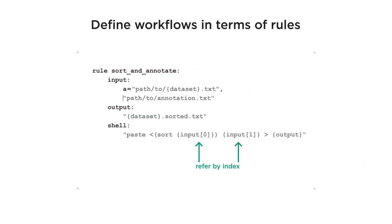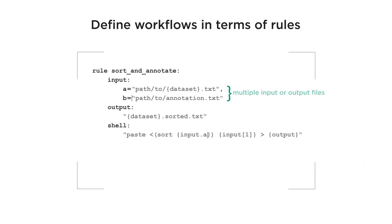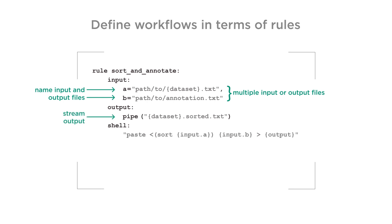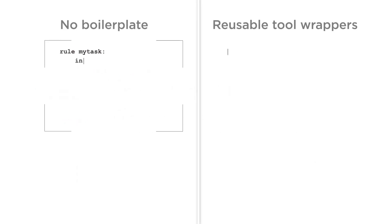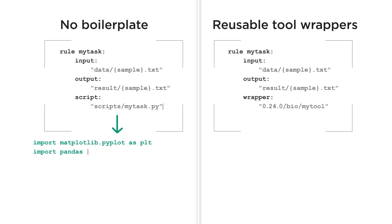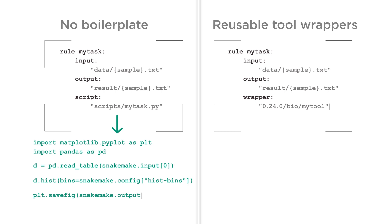Snakemake decomposes workflows into rules. These rules define how to obtain output files from input files. Rules are easily readable and provide various ways of annotation. Rules are not limited to shell commands — instead, you can refer to external scripts or predefined tool wrappers.